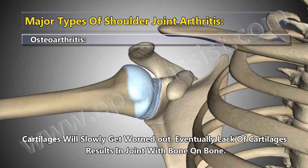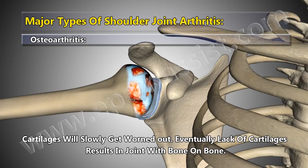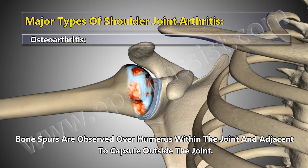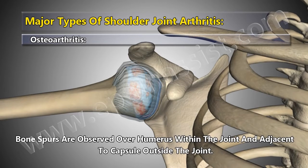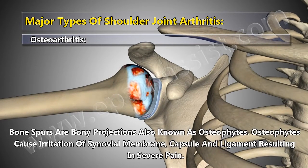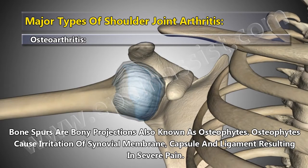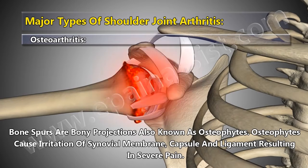Cartilages will slowly get worn out. Eventually, lack of cartilages results in a joint with bone on bone. Bone spurs are observed over the humerus within the joint and adjacent to the capsule outside the joint. Bone spurs are bony projections also known as osteophytes. Osteophytes cause irritation of the synovial membrane, capsule, and ligaments, resulting in severe pain.